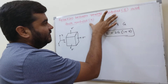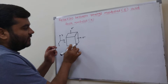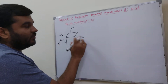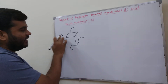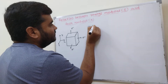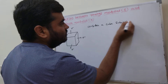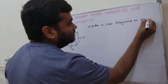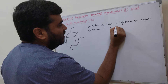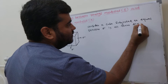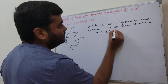Today we will derive the relation between E and K. For that, we need to consider a cube where all sides are equal, and it is subjected to equal stress in all three directions — sigma in the x direction, sigma in the y direction, and sigma in the z direction.